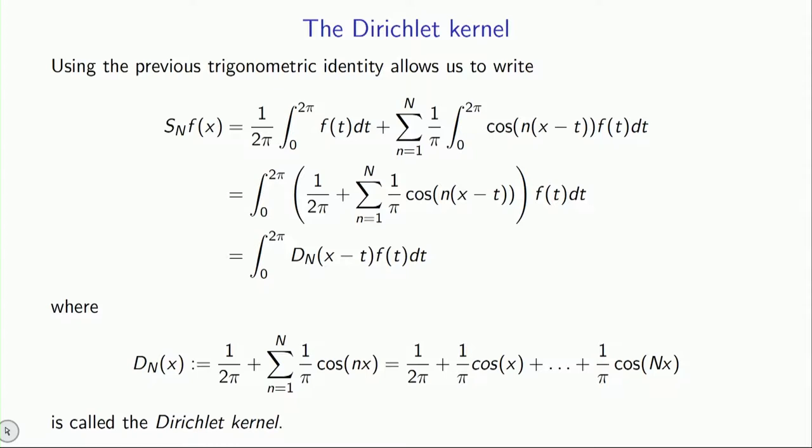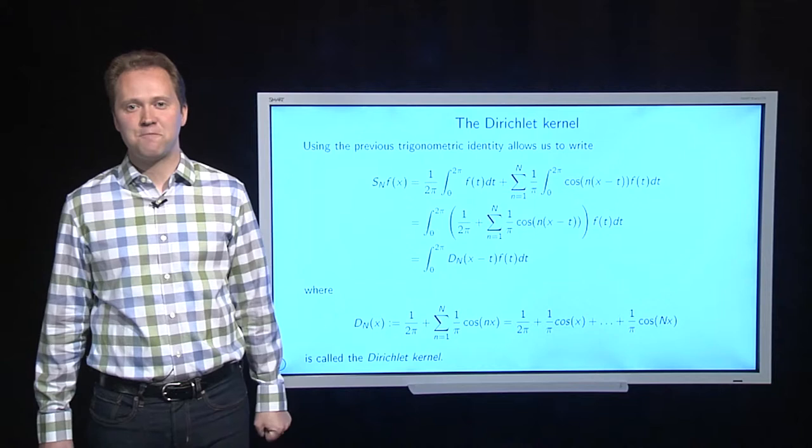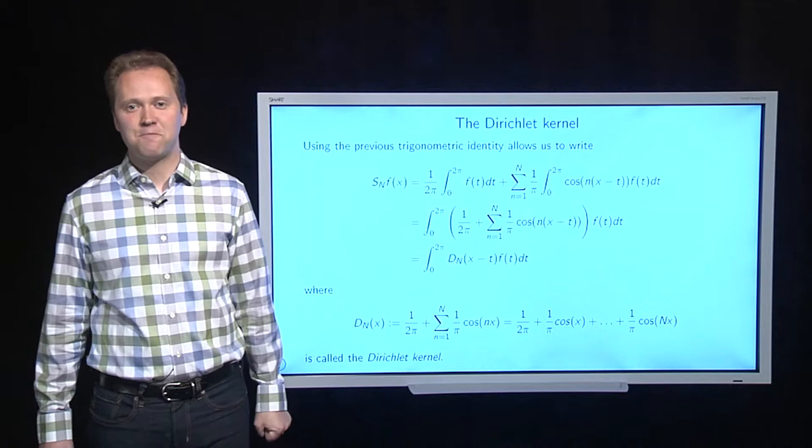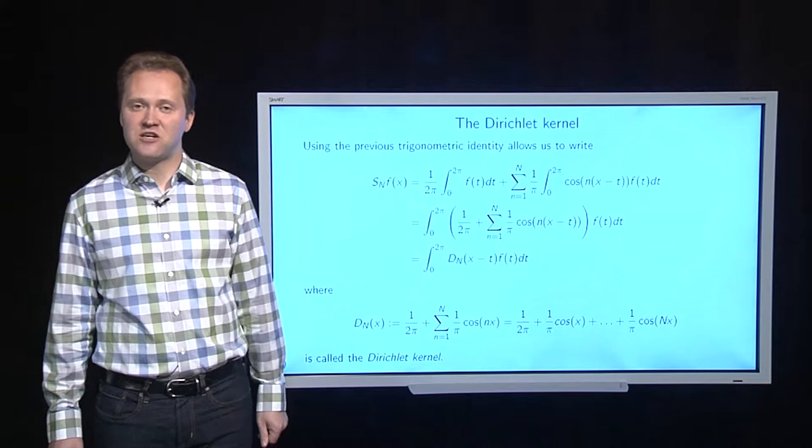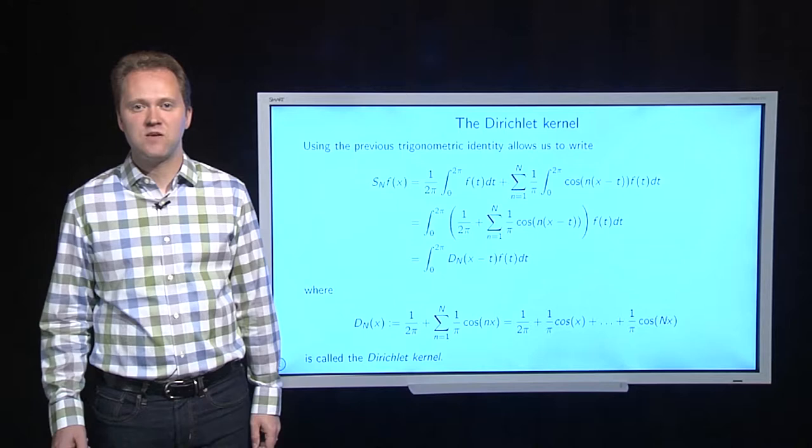Now, note there that it's being evaluated at x minus t, but if we write it out being evaluated just at x, you see it's a sum, well, it's a constant term, plus cosines. It's an ever-increasing sort of N's inside. Now, so if we were able to understand a little bit better that Dirichlet kernel, we would presumably better understand the partial sums for Fourier series. So that's one of our goals here.